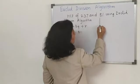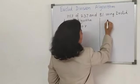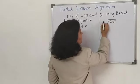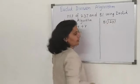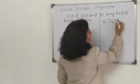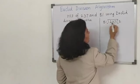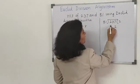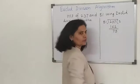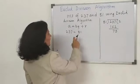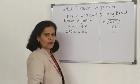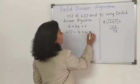Now we will divide 237 by 81. 81 times 2 is 162. So the remainder will be 75. The quotient we got is 2 and remainder is 75.